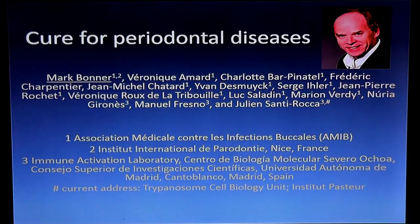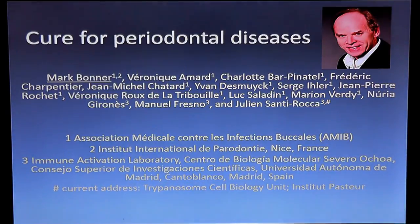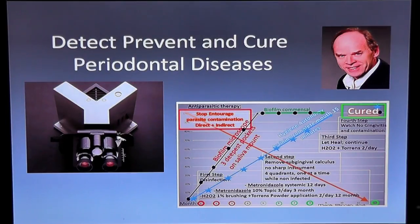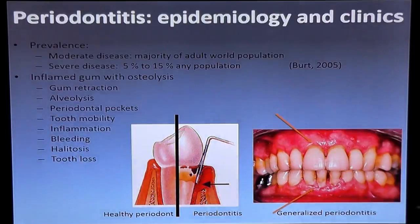Hi, my name is Mark Bonner. I've been a dentist for 40 years and I've been treating periodontal disease for 30 years. We can now say for sure that we can cure this disease. We've been doing it with the microscope for 30 years. I want to explain how we can do this, whether you're a dentist or a patient. We can prevent it, detect it early when you're young, and cure it as long as there's some bone left to hold your teeth. But you have to use the microscope to get rid of this disease.